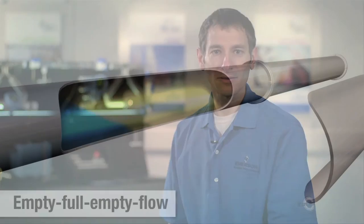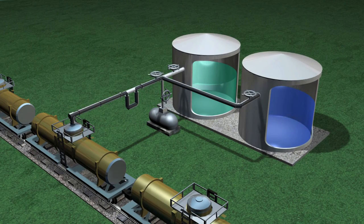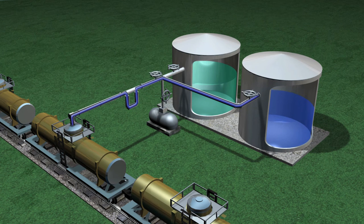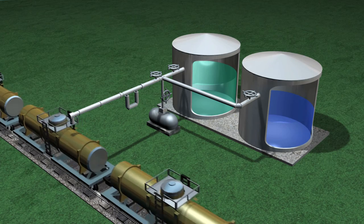Empty-full-empty flow applications include truck and tank loading and are characterized by a precise liquid-to-gas interface. This railcar loading process illustrates two products metered through one meter at different times. To avoid cross-contamination, the meter is blown dry between batches. Each batch begins empty, fills, then ends empty.